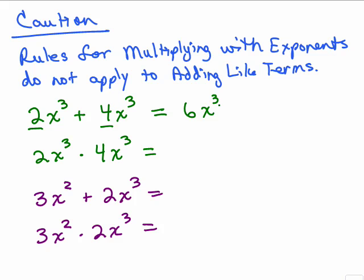On the other hand, the second problem I'm doing multiplication, you multiply the 2 times 4, which is 8. And then since I have the same base, you write the base once and add the exponents. 3 plus 3 is 6. Notice they're very, very different.